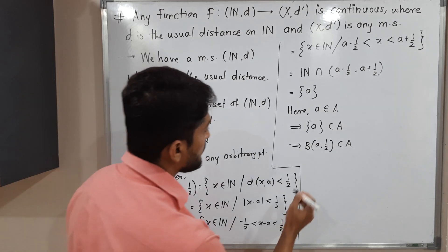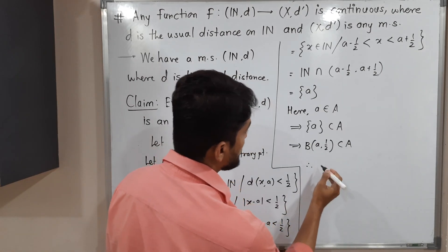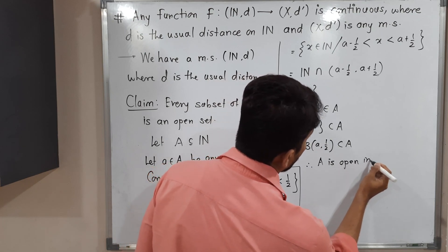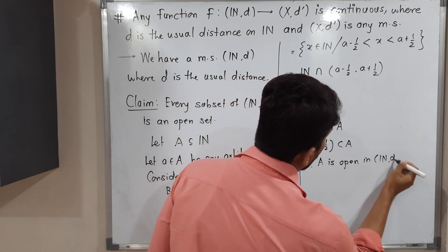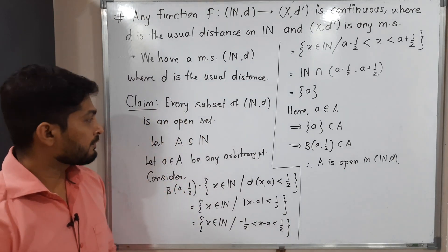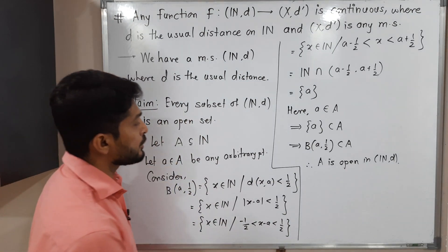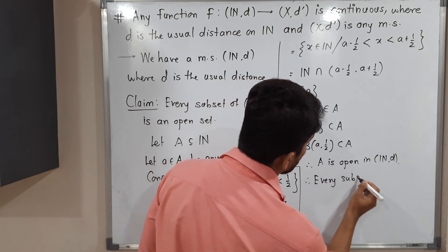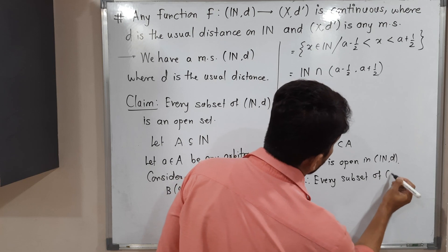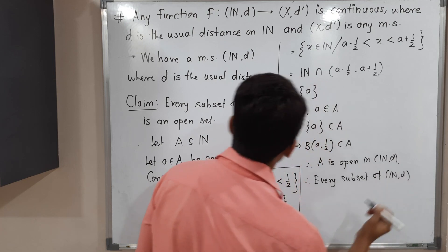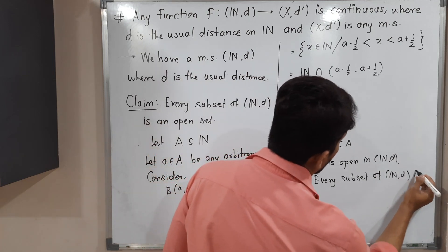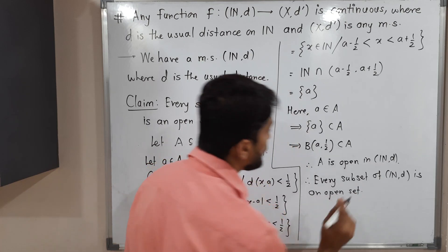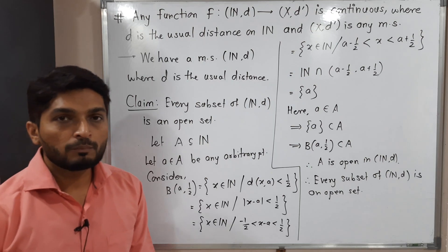We have taken any arbitrary subset A of N and chose any arbitrary point 'a', and finally found a ball around it which entirely lies inside A. Therefore A is an open subset of N. The definition of open set is satisfied, therefore A is open in (N, d). Since A is any arbitrary subset of N, every subset of (N, d) is an open set. In this way we proved our claim.